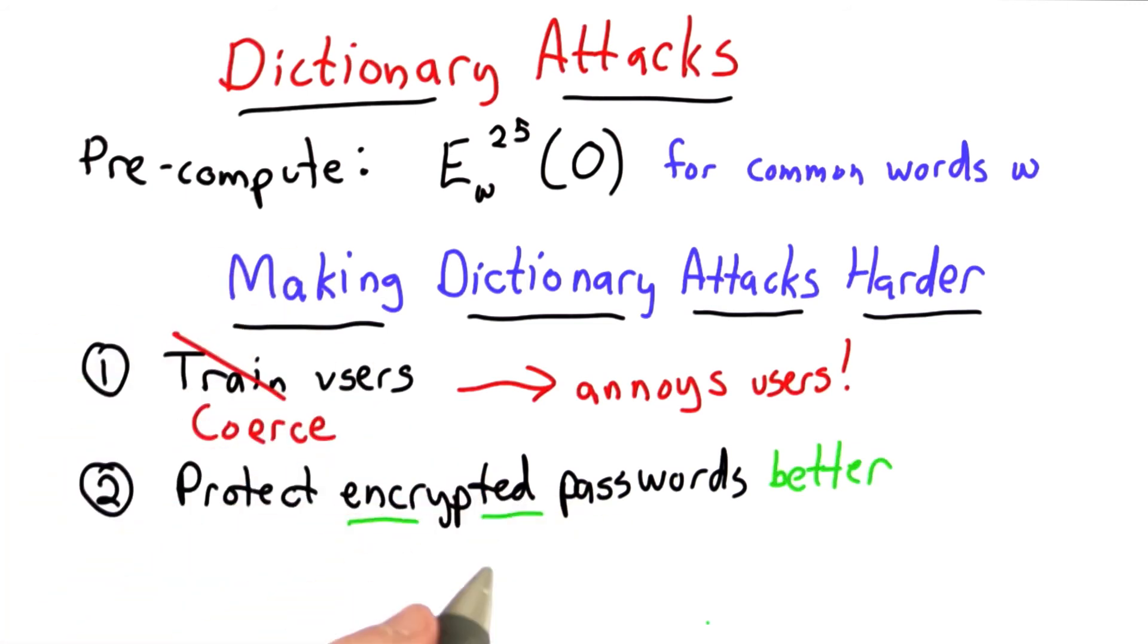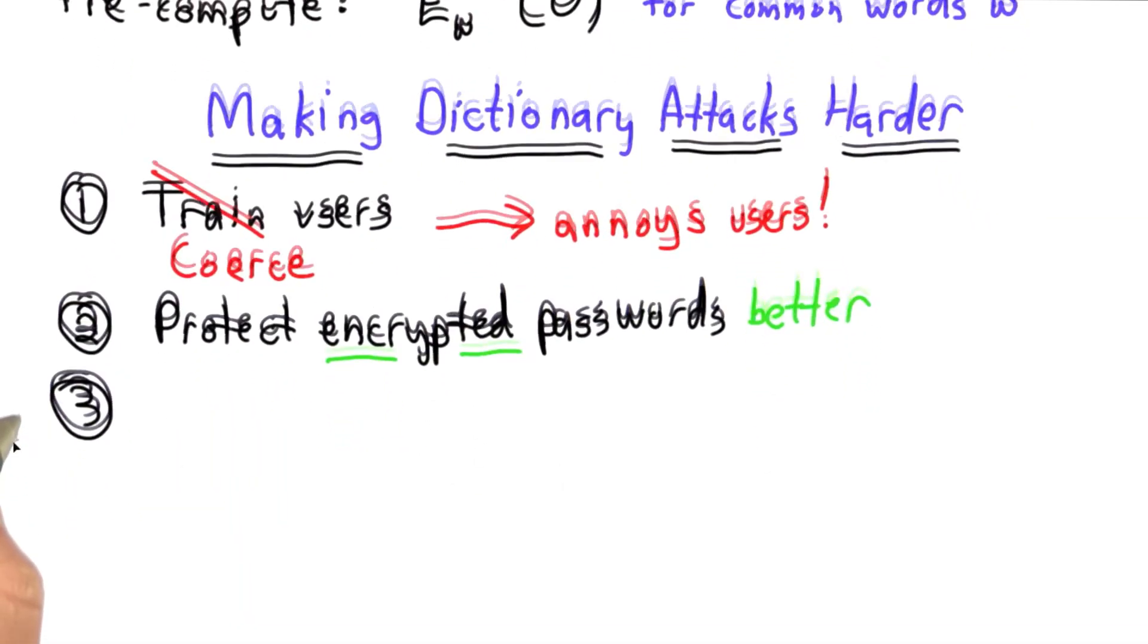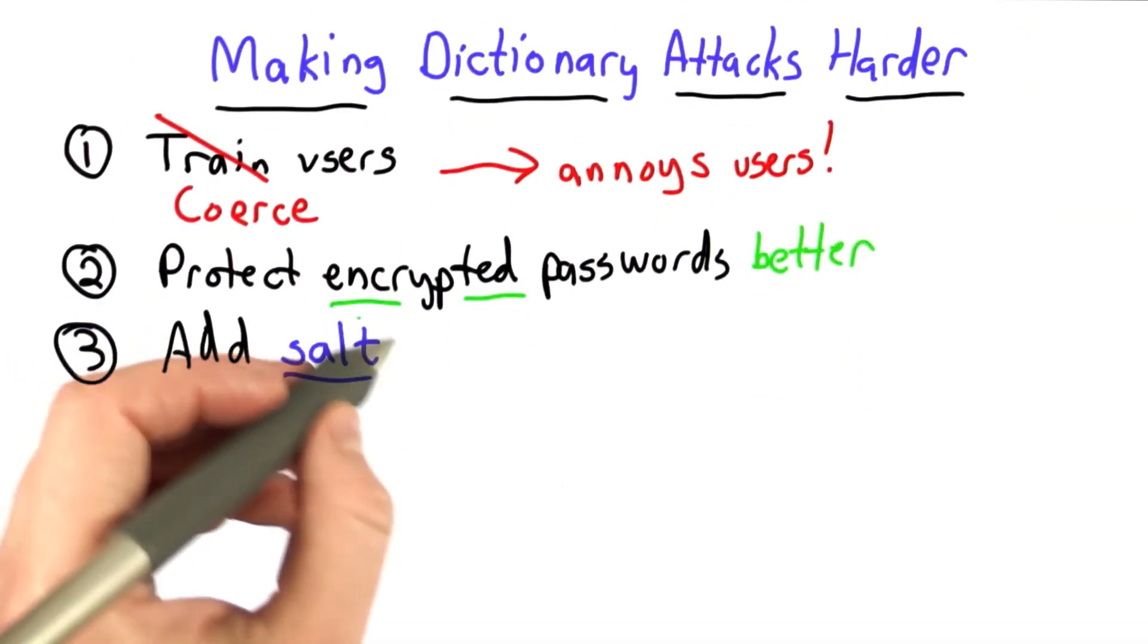So another solution would be to protect the encrypted passwords to make sure that an attacker or an insider can't get access to them. This would certainly help, would prevent the dictionary attack, because they wouldn't have access to the encrypted passwords. They could still try a small number through the login interface. If the passwords are bad enough, the dictionary attacker will still succeed, but only breaking a small number of accounts.